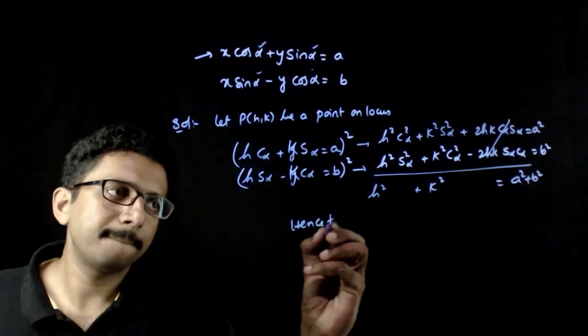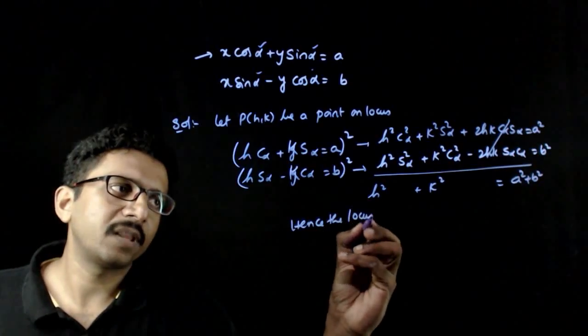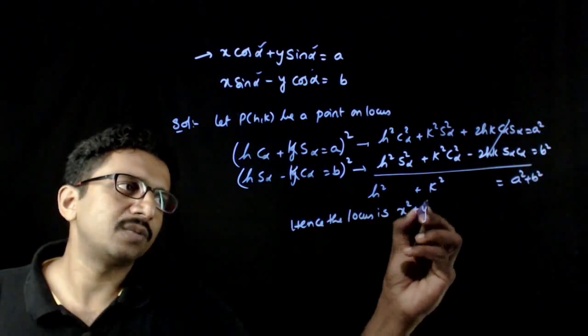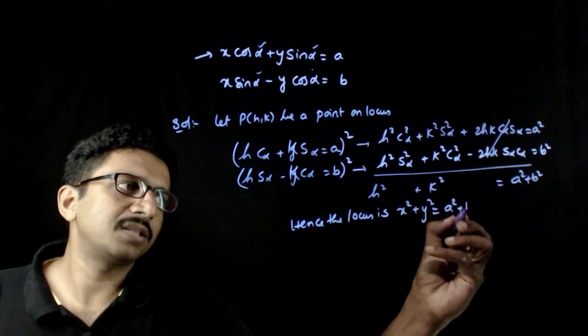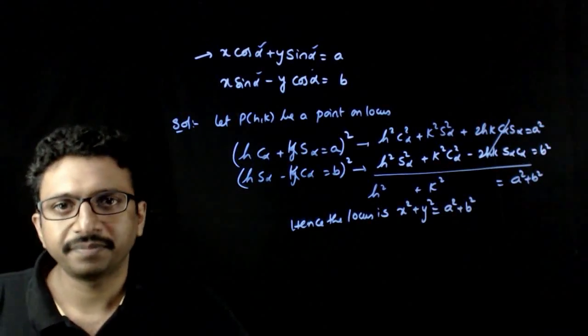Hence the locus is x square plus y square is equal to a square plus b square. Thank you.